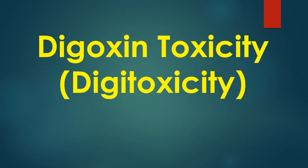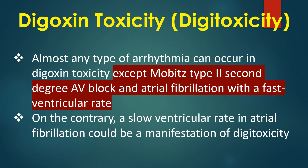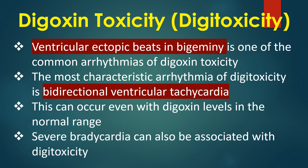Digoxin toxicity has become far less common as the use of digoxin, especially loading doses, has come down. Still, occasional cases can occur due to renal dysfunction or drug interactions. Almost any type of arrhythmia can occur in digoxin toxicity except Mobitz type 2 second degree AV block and atrial fibrillation with a fast ventricular rate. On the contrary, a slower ventricular rate in atrial fibrillation could be a manifestation of digoxin toxicity. Ventricular ectopic beats in bigeminy is one of the commonest arrhythmias of digoxin toxicity.